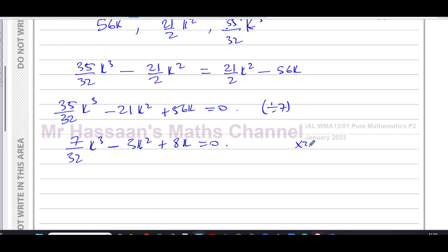And then to get rid of the fraction from here to make life easier, I can multiply both sides by 32. So this is going to be 5k cubed minus, now 32 times 3 is 96k squared. And then I have plus 8 times 32, 240 plus 16, that's 256k equals zero.